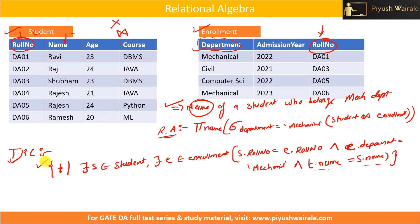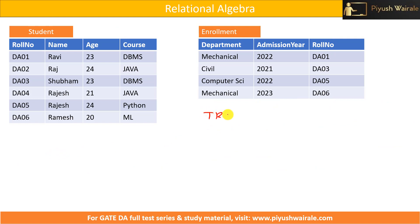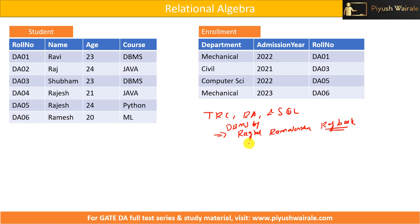I hope you understand this concept of TRC. For TRC, Relational Algebra, and SQL, I suggest you solve the Raghu Ramakrishnan DBMS book. It is a reference book with a very good number of questions, and you can expect exam questions directly from it. It is available online. In the next video, I will come up with previous year GATE questions based on TRC and Relational Algebra. Thank you everyone, bye-bye.